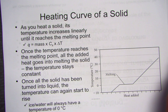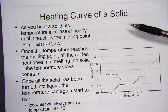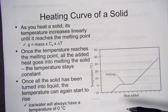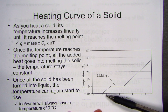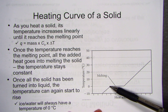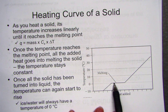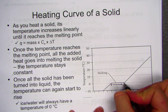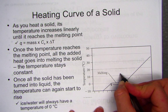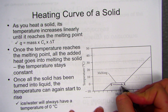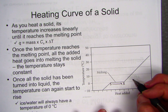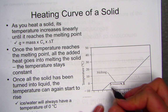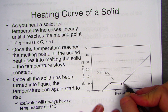Now we look at heating curves of a solid. As you heat a solid, its temperature increases — but then it flatlines during the phase change. As the solid is melting into a liquid, there is no change in temperature. All of the energy being put into the system is used to break apart the intermolecular attractions as the solid separates to become a liquid.